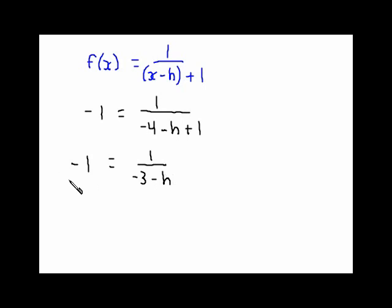So negative 1 is equal to 1 over negative 4 plus 1 is negative 3 minus h. And then do a little bit of algebra on this one. I like to cross multiply. Or you could multiply both sides by negative 3 minus h. But the cross multiplication would take you to this. Negative 1 times negative 3 minus h is equal to 1. So this becomes 3 plus h is equal to 1. And when you solve, you'll get h. Subtract the 3 away. h is equal to negative 2.